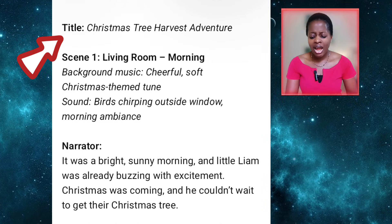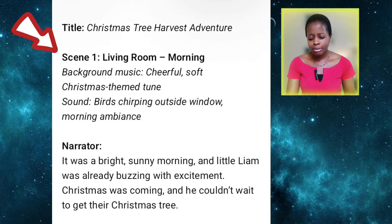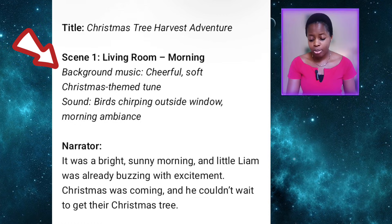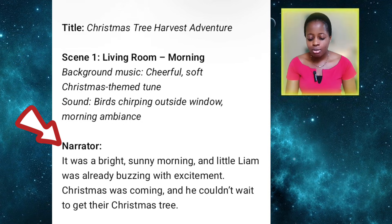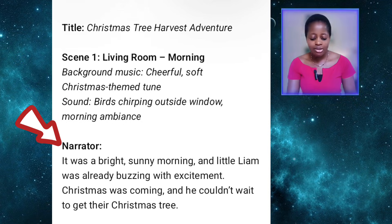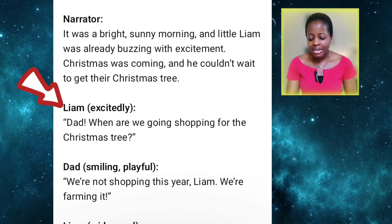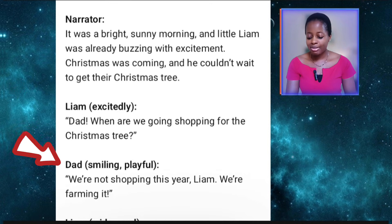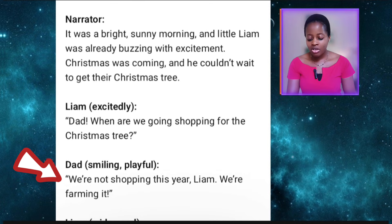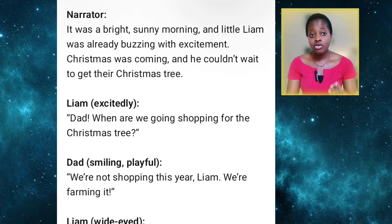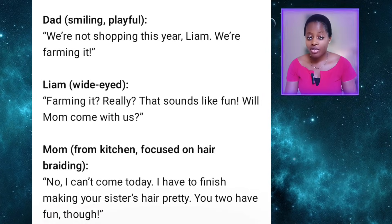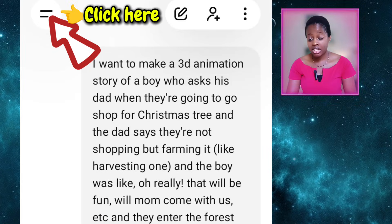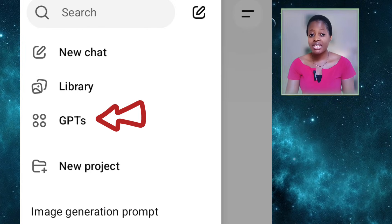I told ChatGPT that I want it to be a narrated 3D animated story with dialogues and background music and sounds — give me a script for this. And ChatGPT went ahead and gave me the script. You can see: title, Christmas Tree Harvest Adventure. Scene 1, Living Room Morning. Background music suggested, sounds suggested, and narrator lines. It gave me the full detailed script. I'm using the free version of ChatGPT, but if you have the pro version, you can use one of the GPTs to generate your script — it would be easier that way.